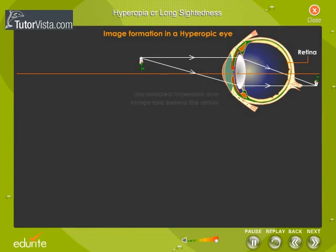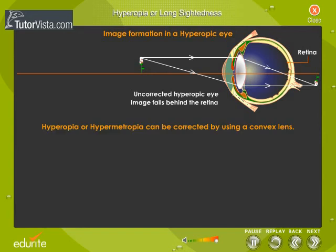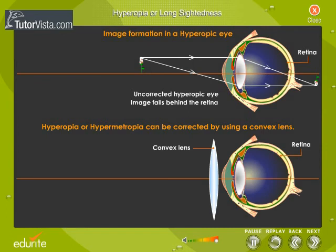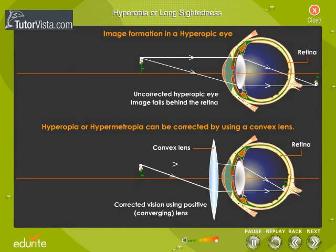In this defect, the light rays converge behind the retina. This results in the formation of a circle of diffused light on the retina, producing a blurred image. This optic abnormality can be corrected with a convex lens, which intensifies the rays' refraction so that the image is formed on the retina.